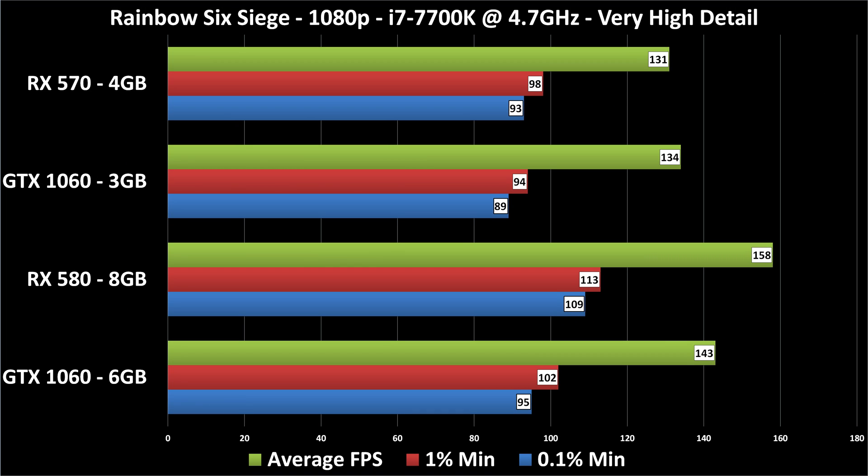This takes us to Rainbow Six Siege — probably by far the most popular game in this test. Very high detail. Look at the incredible performance: the average is over 130 frames per second, even on the RX 570. This game plays fine at 1080p. I honestly thought about going back and retesting at 1440p, because I think these cards — especially the two better cards — would play this game at 1440p without complaint. If you've got a 144Hz monitor, the two better cards — the 8GB and 6GB — will basically hold an average of about 144 or better frames per second. The 1% minimums are 113 and 102 respectively, and if you want better minimums, there's the GTX 1070. Still, any of these cards are going to be just fine for most people.